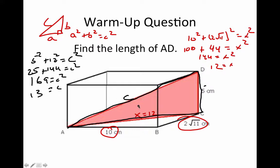The most common Pythagorean triple is 3-4-5: 3² + 4² = 5². It's used everywhere in real-world applications. There's also a 7-24-25, and a few others as well.